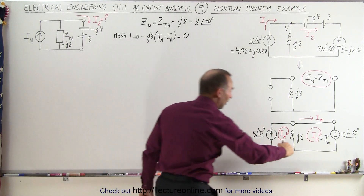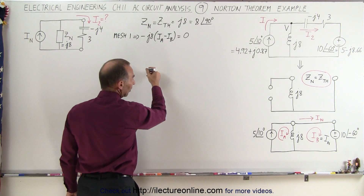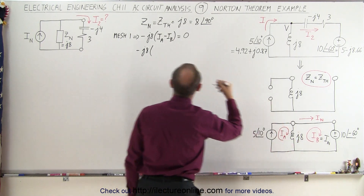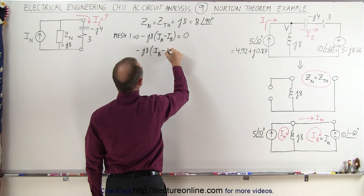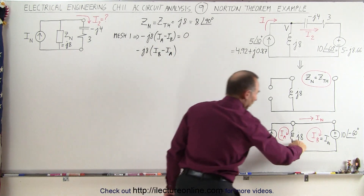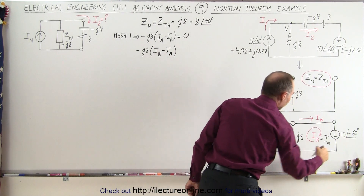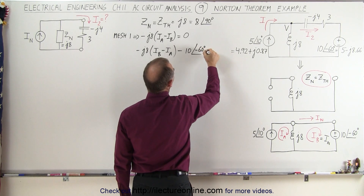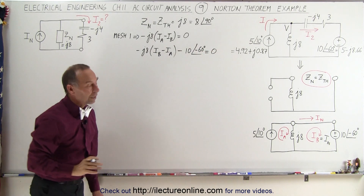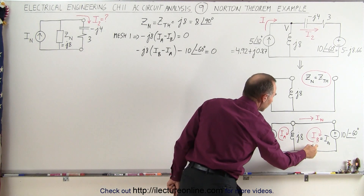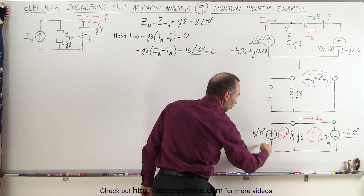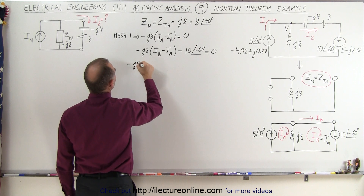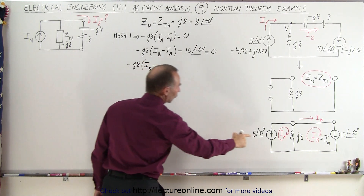Around the second mesh, starting from here and going all the way around: we have minus J8 times (IB minus IA), going in the same direction as IB. Coming around, we drop across this voltage, so it's minus 10 with a phase angle of minus 60 degrees, and that all adds up to zero. Since we're looking for IB and we know that IA equals the source current, we replace it with the source current: minus J8 times (IB minus the source current).